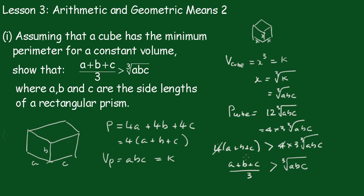So the arithmetic mean is going to be greater than the geometric mean.